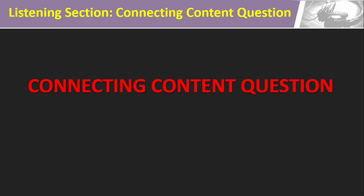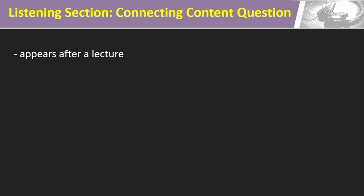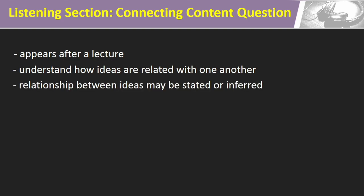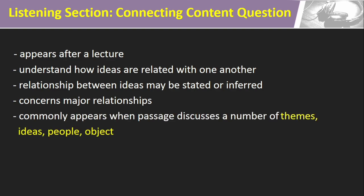Connecting Content questions almost exclusively appear after a lecture. They measure the test taker's ability to understand how ideas in the lecture are related with one another. How ideas are related may either be clearly stated or inferred from the words of the professor. Almost all Connecting Content questions concern major relationships in the passage, and commonly appear when the passage discusses a number of themes, ideas, people, or objects.